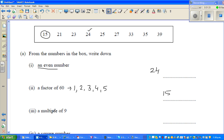A multiple of 9 - the multiples of 9 are 9, 18, 27, and so on. Here you've got 27, which is a multiple of 9, so 27 is the answer.